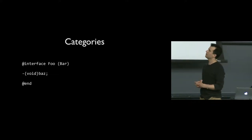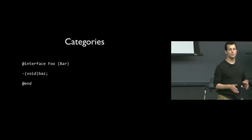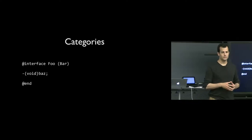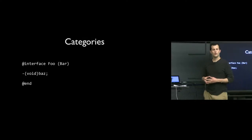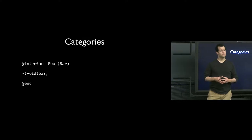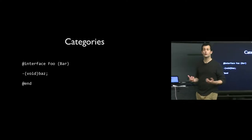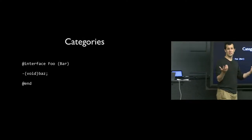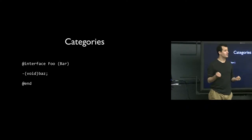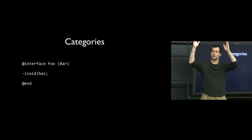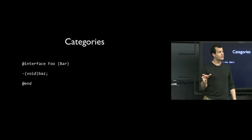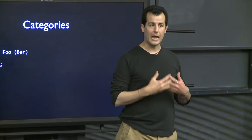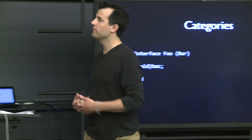A category allows you to add more methods to an existing class — like an extension. This is particularly helpful for large classes with many methods: you can categorize them, put related messages in distinct files, and have different people work on different subsets of functionality. It's somewhat similar in spirit to JavaScript's prototype property, whereby you can add functionality to existing objects by a similar mechanism.